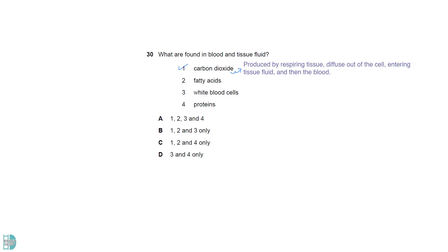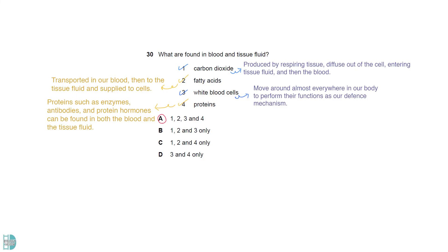Carbon dioxide is produced by respiring tissue. It will diffuse out of the cell, entering tissue fluid and then the blood. Fatty acids are needed by our body cells. They are transported in our blood, then to the tissue fluid and supplied to the cells. White blood cells move around almost everywhere in our body to perform their functions as our defense mechanism. Proteins such as enzymes, antibodies and hormones can be found in both the blood and the tissue fluid.